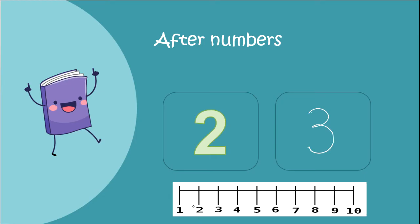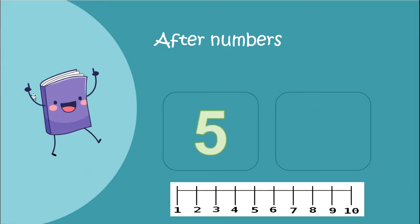So when we're saying our numbers: 1, 2, 3 — 3 is after 2. Let's look at another after number. We have the number 5. What number comes after 5? What number is behind 5, or comes next on our number line? 6! Yes, 6 comes after 5. So we're going to put 6 in our box here because 6 comes after 5.